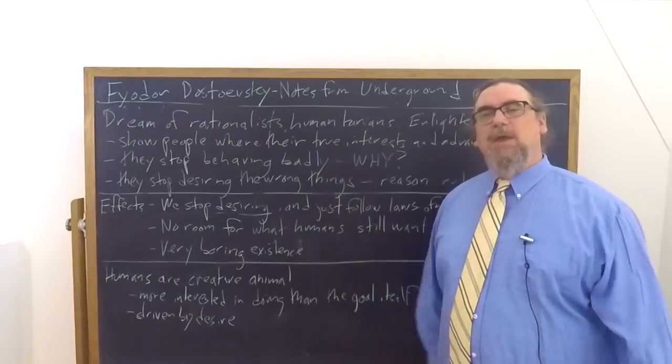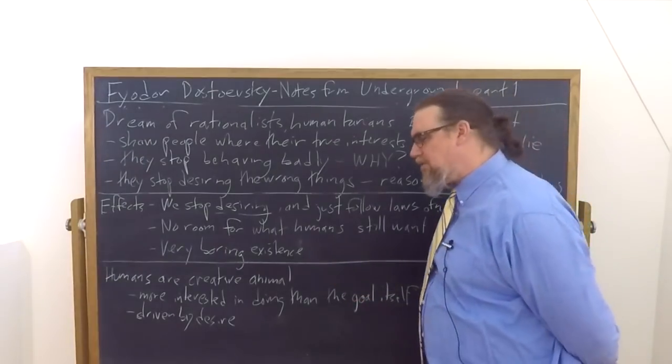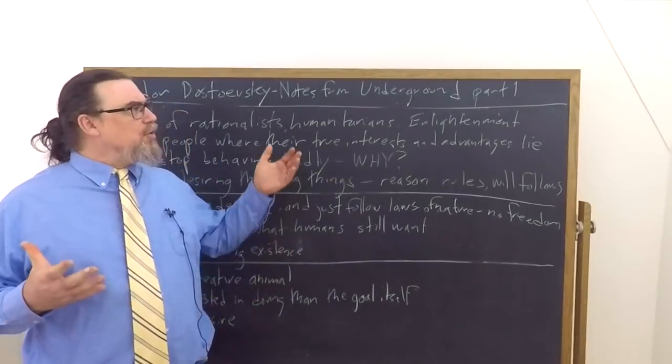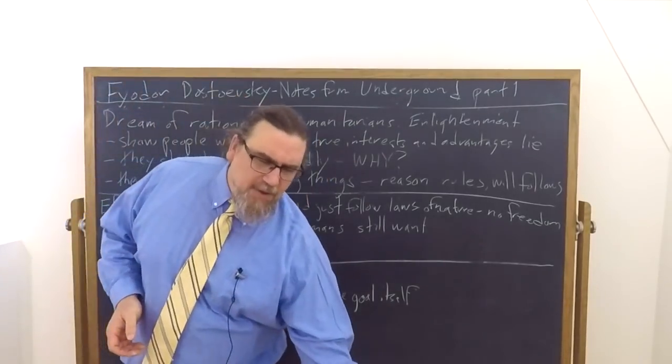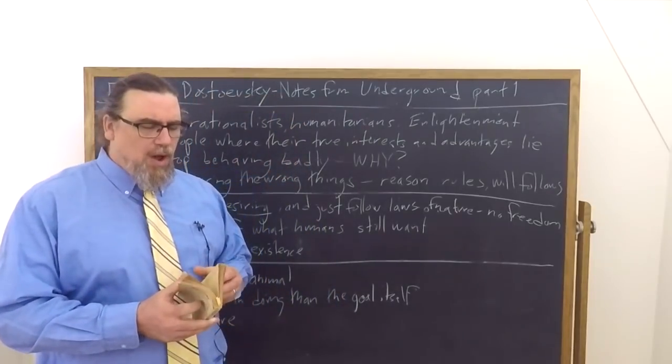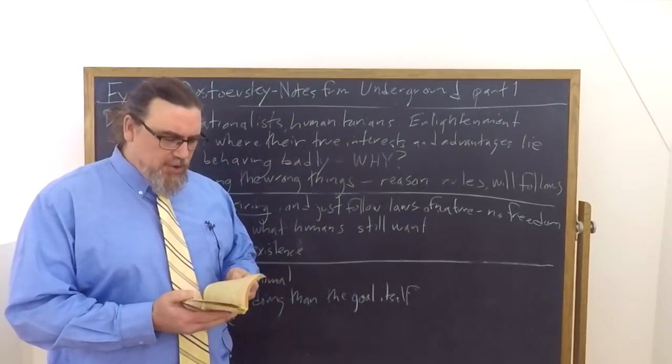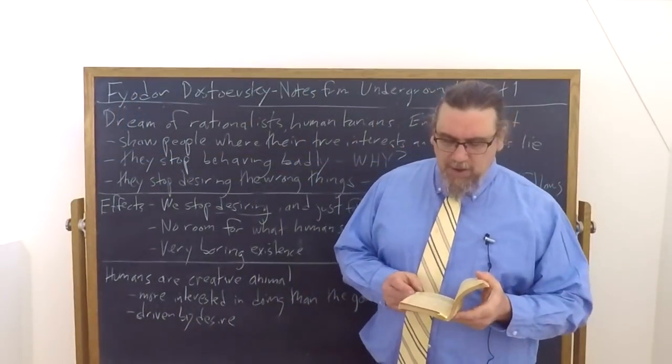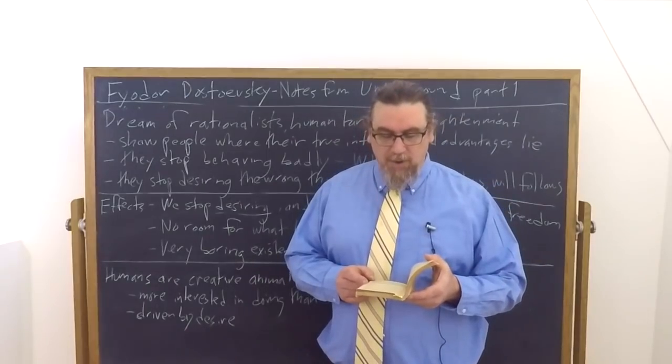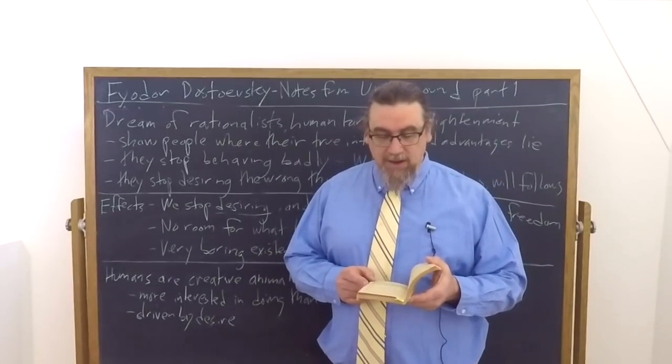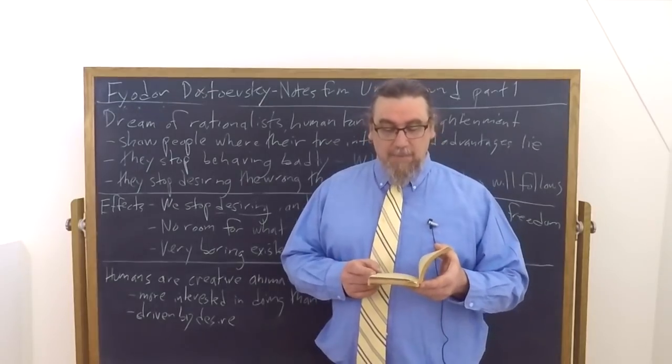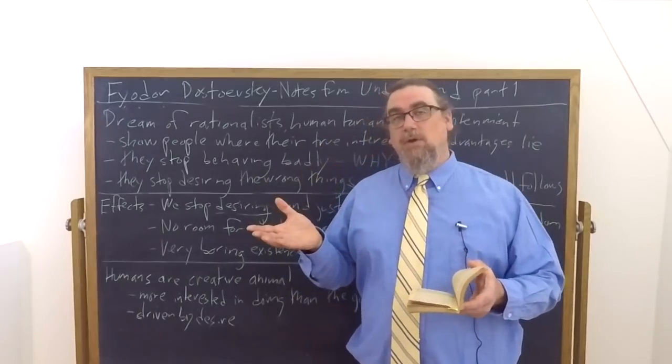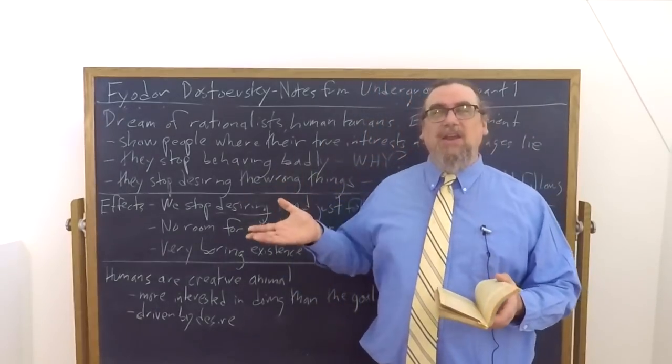And so the idea behind these reformers is whatever aspect of life it happens to be, we can show people where their true interests and advantages lie. And if we do that, they're no longer going to behave in the ways that they do. He says man does nasty things just because they don't know where their real interests lie. If they were enlightened about it, they would immediately stop acting like pigs and be kind and noble, and they would see where their advantage lay and then it lay in acting virtuously.